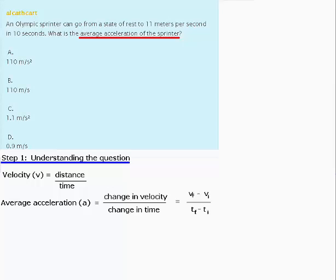That is, we're measuring the difference between the final velocity and the initial velocity. This is divided by the final time, or the end time, minus the initial time, or the start time.